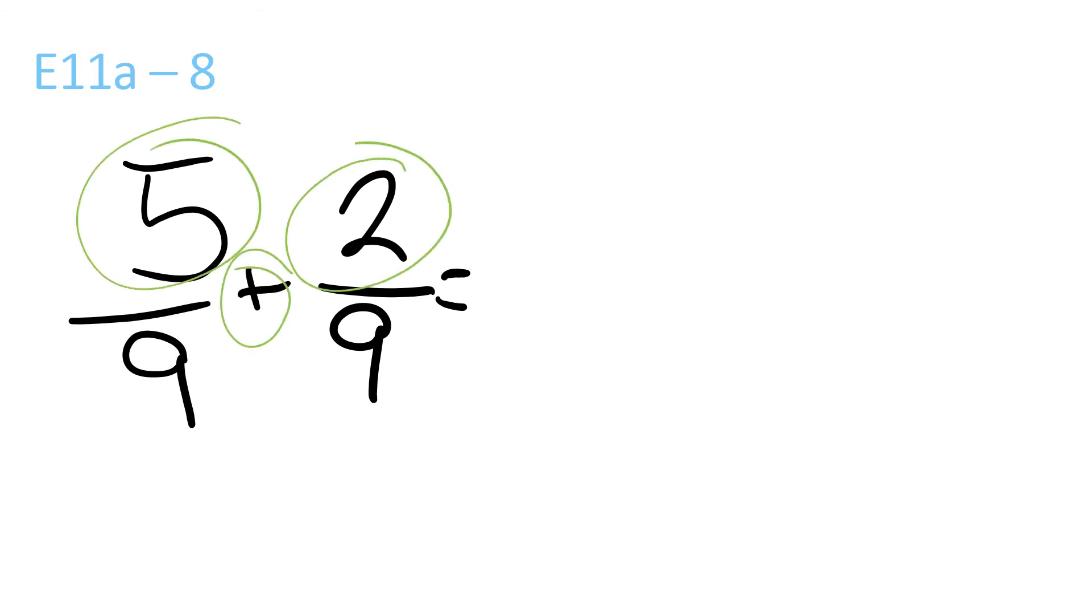5 plus 2 is 7 over 9, because 9 is at the bottom.